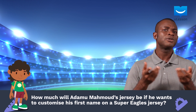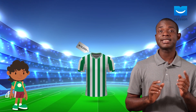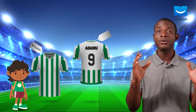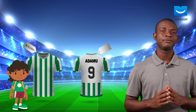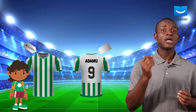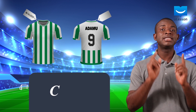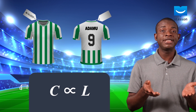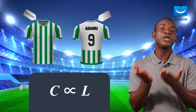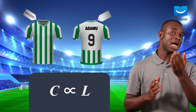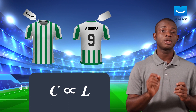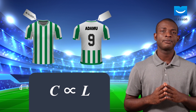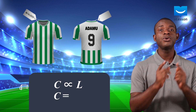Take a second to think about this question. One jersey costs 14,000 Naira and the name Adamu is to be customized on the jersey. We can see that the cost of the customized jersey, C, is directly proportional to the number of letters L to be customized on the jersey, because the cost depends on the number of letters. As we have always done, we introduce a constant to eliminate the proportionality sign. Let's call this constant K.